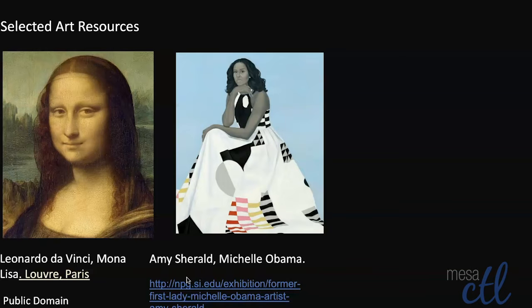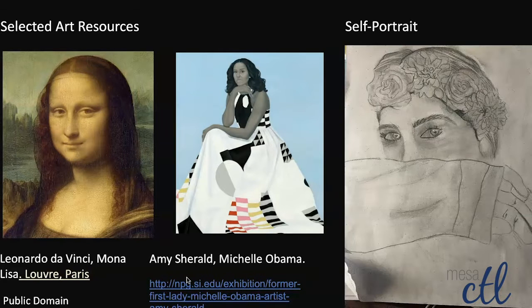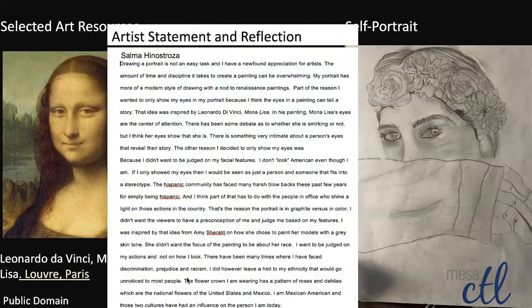Here are a few examples of assignments that students have submitted. The first is a young woman who decided to look at the Mona Lisa and Amy Sherald's portrait of Michelle Obama, thinking about ideas about what we read into the eyes and what we read into the color of skin. She does a black and white drawing on the right hand side, and in her reflection she talks about how she was learning about identity through having looked at the works and then creating her own.